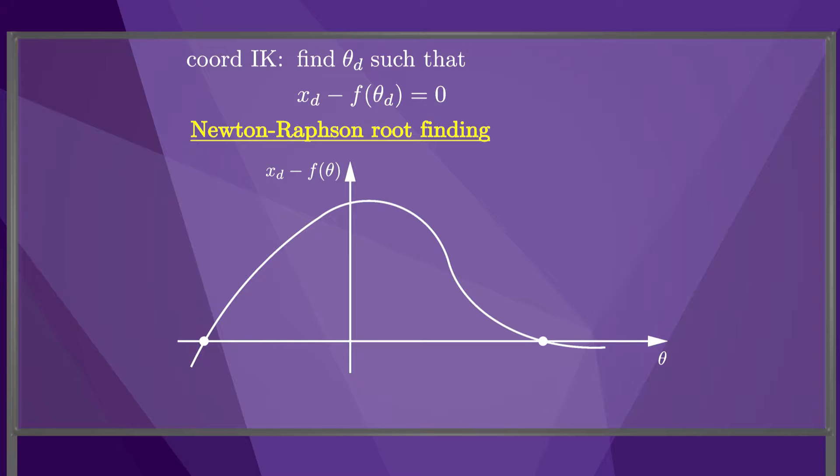Now, with the benefit of hindsight, we designate one of the solutions as theta-d. We also make an initial guess at the solution, theta-zero.